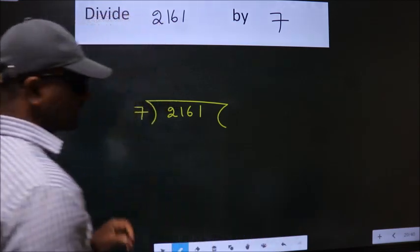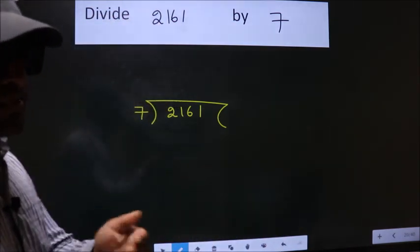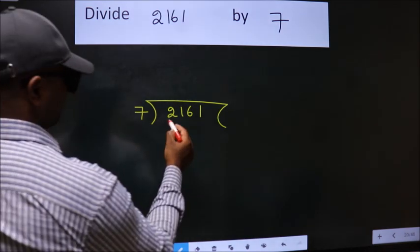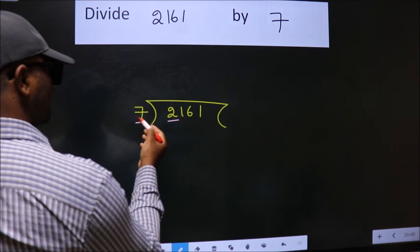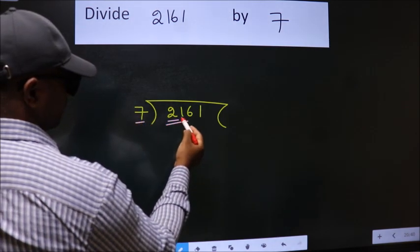This is your step 1. Next, here we have 2, here 7. 2 is smaller than 7, so we should take two numbers, 21.